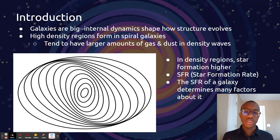Galaxies are big, and their internal dynamics shape how their structure evolves. On the left, you can see an image here. This is a galaxy's density waves. Where the circles are closer together, there's more stuff. And where more stuff is, you have a higher star formation rate. The star formation rate determines a lot of factors about a galaxy.